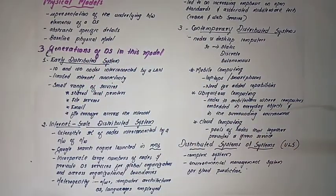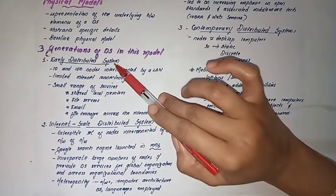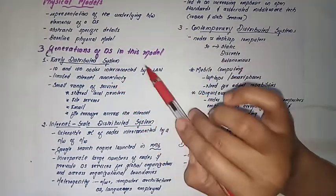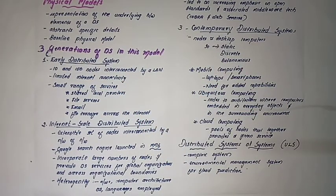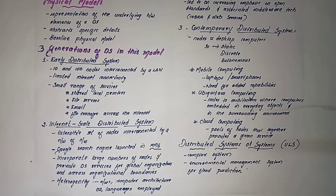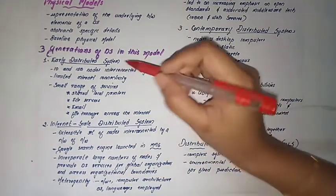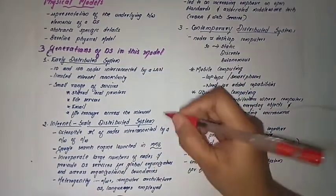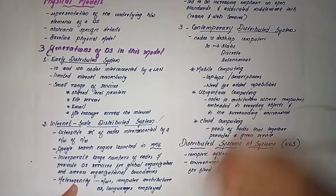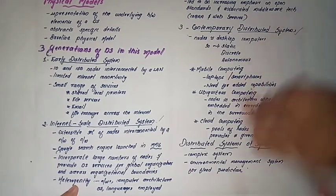The baseline physical model covers three generations of distributed systems. We call these three generations: the early stage, the middle stage, and the contemporary stage. The three main items are: early distributed systems, internet-scale distributed systems, and contemporary distributed systems.